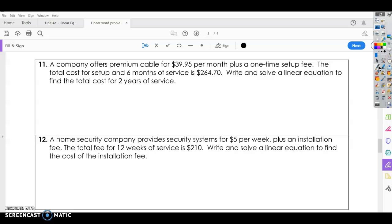The next example says, a company offers premium cable for $39.95 per month. That's actually pretty cheap for a premium cable. Plus a one-time setup fee. The total cost for setup in six months of service is $264.70. So six months, $264. So we can say our slope is how much per month, $39.95. And our ordered pair, or our point that we give, is six months is our time. The cost depends on the time. So that's our, six is our independent. The cost is our dependent.